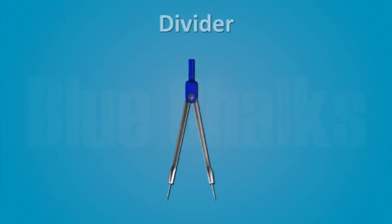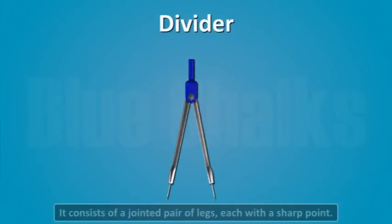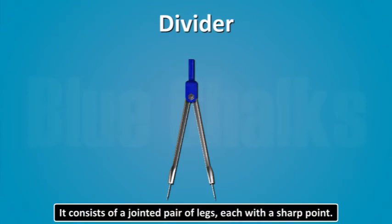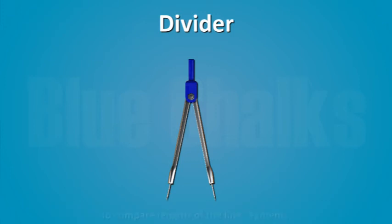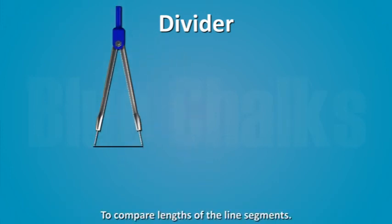Next is Divider. Divider is similar to a compass. It consists of a jointed pair of legs, each with a sharp point. Divider is used to compare lengths of line segments.